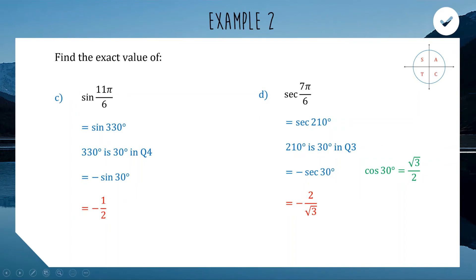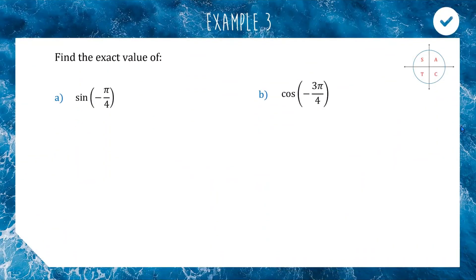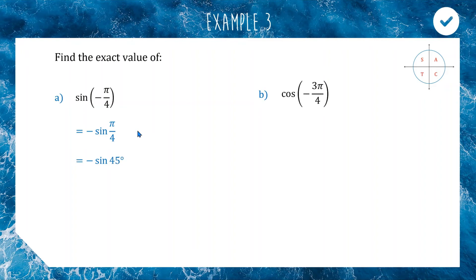Now some negative angles. For question a, sin(−π/4): sine and tan are odd functions, so the minus sign can be taken out front. Sin(−π/4) = −sin(π/4). π/4 is 45 degrees, so the answer is −1/√2.